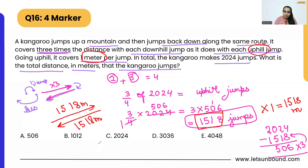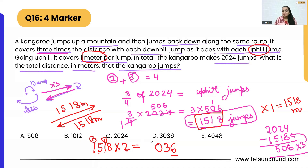To find the total distance, we double the one-way distance: 2 × 1518 = 3036 meters. That is option D.